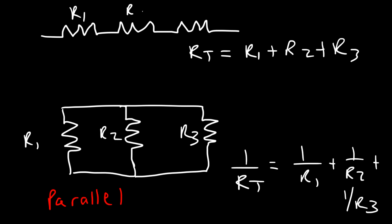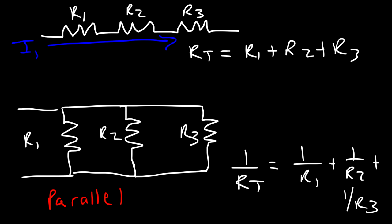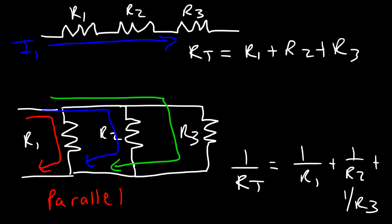How can you distinguish if a circuit is in series or in parallel? In a series circuit, the current is the same — there's a single path for the current to flow. In a parallel circuit, there are multiple paths for the current to flow: it can flow in this path, this path, or that path. Whenever you have multiple paths, you have a parallel circuit; in a series circuit there's only one path.